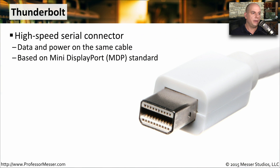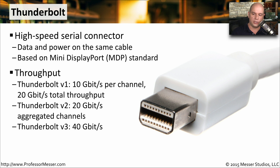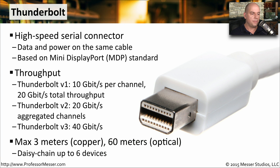One of the latest connector technologies is Thunderbolt — a very high-speed serial connection for peripheral devices that carries both data and power. Its interface looks exactly like a mini DisplayPort connection because it uses that same physical interface. Thunderbolt version 1 supports 10 gigabits per channel with two channels for 20 gigabits total. Version 2 increased to 20 gigabits per second aggregated. Version 3 provides 40 gigabits per second total. The maximum copper cable length is three meters, with optical connections extending up to 60 meters. Up to six devices can be daisy chained together.